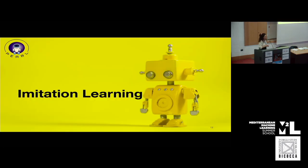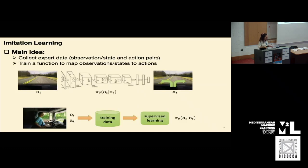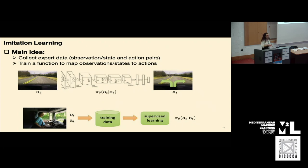We will focus first on imitation learning. One problem with imitation learning is that Markovianity doesn't really hold. The main idea of imitation learning is to imitate some expert data. You first collect expert data — observations or states, depending on the environment — along with action pairs, and then train a function to map these observations or states to those actions.